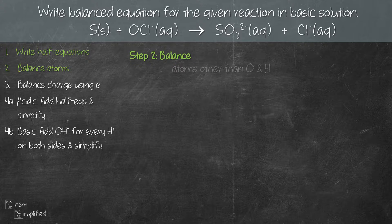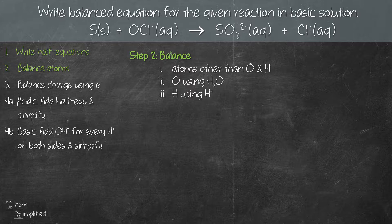Next, step two: we need to balance the atoms. It's very important that we follow the order. Let's first balance all atoms except for O and H, then we work on balancing oxygen using H₂O, and finally H using H⁺. So let's start with our oxidation equation. Sulfur is already balanced because we have 1 S on the left and 1 S on the right.